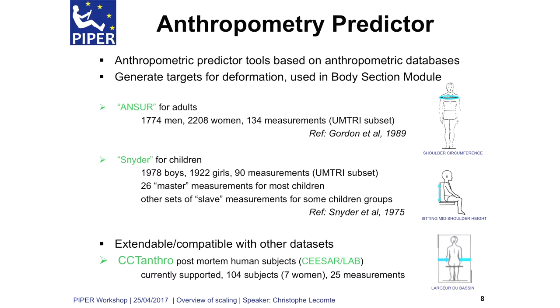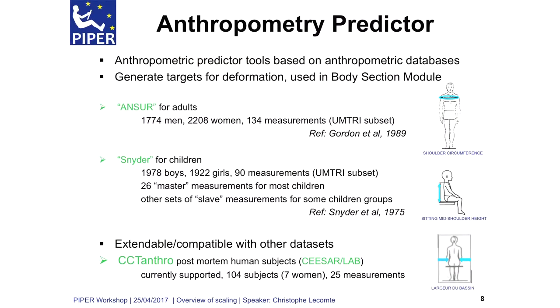These two databases are subsets of the original full data generated by the ANSUR research and by the publication by Snyder, and this subset has been selected by the University of Michigan. For Snyder, there are some main measurements available for all the children that have been measured, and some are only measured on a few subjects. We handle this with a set of slave measurements and main measurements — 26 measurements on children.